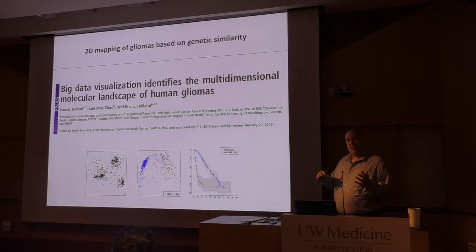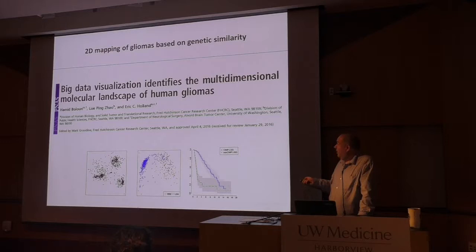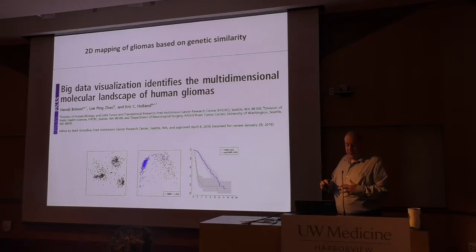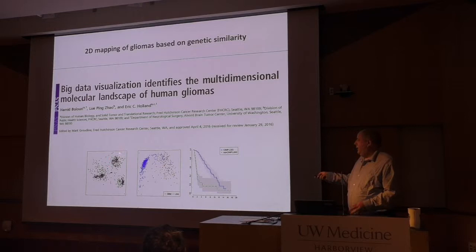So that's the history and our current understanding of how we classify these tumors. Around the time the 2016 WHO classification came out, Eric Holland at the Hutch asked how we can take big molecular data sets and visualize them in a way that we could easily understand the biology. They published this in PNAS, taking TCGA data — copy number based on SNP arrays with thresholds, along with whole exome sequencing and gene variants — using multi-dimensional scaling analysis.